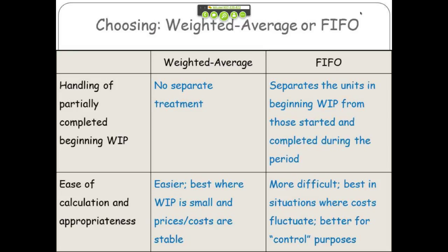So how do you choose between the two? Weighted average is easier. FIFO is a little bit more complicated, but once you get used to it, it's just subtracting out some numbers at the end of the day. If your month-to-month costs don't fluctuate much, your per-unit cost doesn't fluctuate much, then you might as well do weighted average because it's easier. But if you have a large component like direct material — say that's oil and prices fluctuate — or if your labor costs fluctuate from month to month, then FIFO is more appropriate. But if you're pretty stable month to month, weighted average is going to give you a good enough answer.